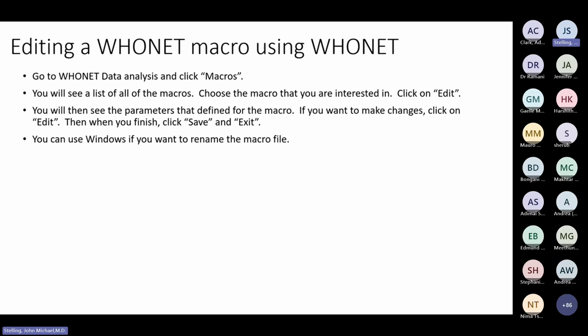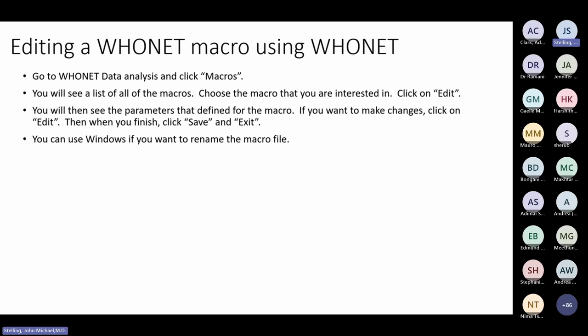Most people create their macros, use them, and don't need to edit them. However, there can be advantages to editing a macro manually — for example, to add another organism, change data files, or fix a spelling mistake in the macro name. Go to Hoonet data analysis, click Macros, see the list of macros, choose the one you want, and click Edit. Hoonet will show you the parameters defined in the macro. If you want to make changes, click Edit again, make the changes, then save and exit. You can also use Windows to rename the macro file.